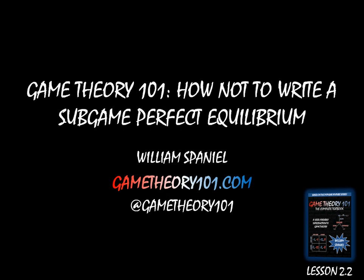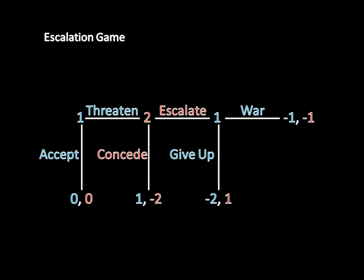As long as you follow the rules I'm about to give you here, you won't lose those points for a stupid reason. This is something I cover in Lesson 2.2 of Game Theory 101: The Complete Textbook — check the video description for more information. Now, in the last video we were talking about the escalation game, and we found that the subgame perfect equilibrium was for player 1 to accept and declare war, and for player 2 to escalate.